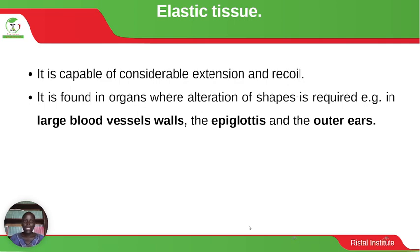Elastic tissue is capable of considerable extension and recoil because it is elastic — it can extend and then go back to its original shape, which we refer to as recoiling. It is found in organs where alteration of shape is required, for instance in large blood vessel walls where the vessels must stretch. It is also found in the epiglottis and outer ears.